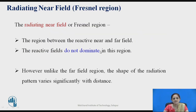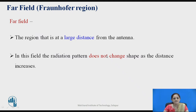The second region is the radiating near field region, also known as the Fresnel region. It is the region between the reactive near field and the far field, where reactive fields do not dominate. The third region is the far field region, also known as the Fraunhofer region, where a large distance is considered with respect to the antenna. In this region, the radiation pattern does not change its shape as the distance increases.